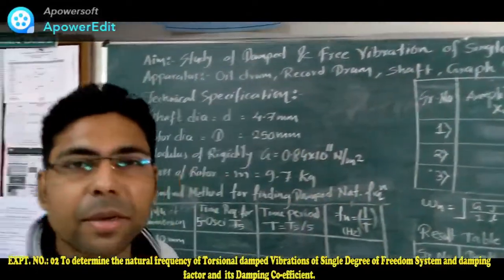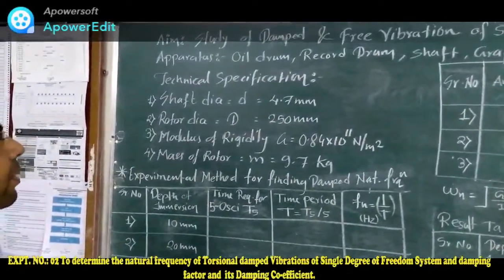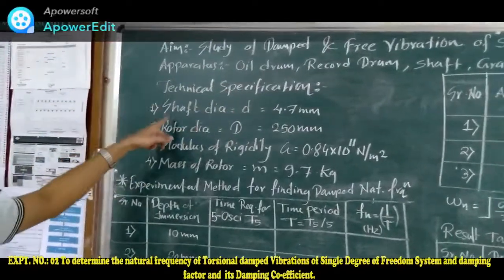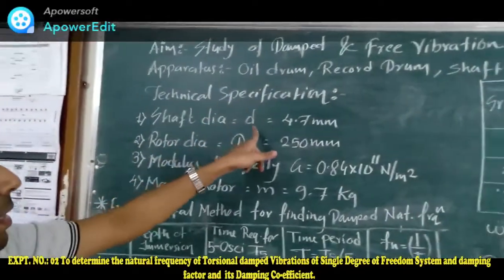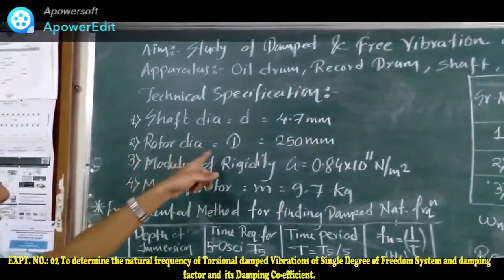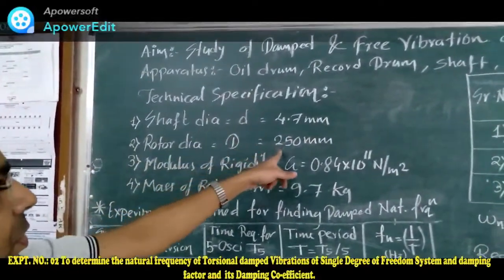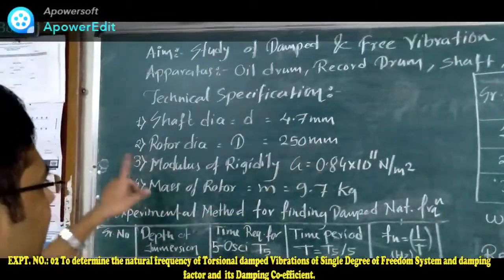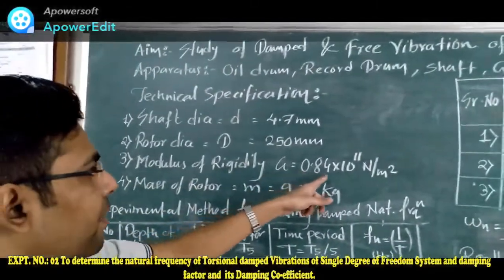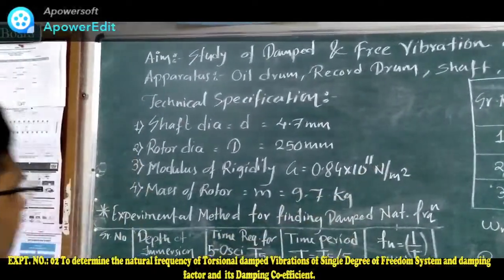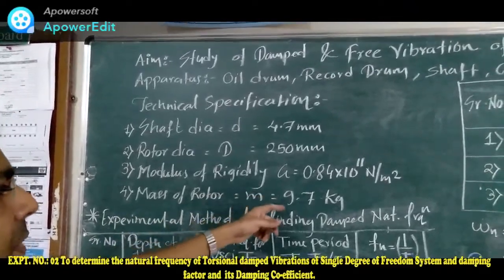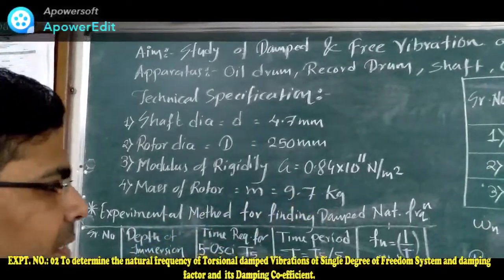The technical specifications are: shaft diameter (d) = 4.7 mm, rotor diameter (D) = 250 mm, modulus of rigidity (G) = 0.84 × 10¹¹ N/mm², and mass of the rotor (m) = 9.7 kg.